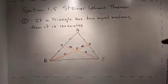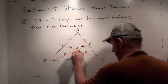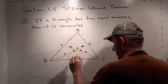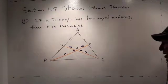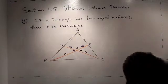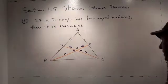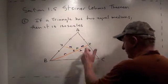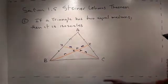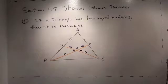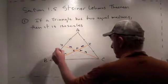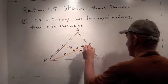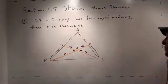Now notice that this angle and this angle are the same because they're vertical angles — opposite angles at an intersection. From elementary geometry, side-angle-side: we have two triangles where side, angle, side are the same, so those two triangles are congruent. And what that tells us is that this side here is equal to this side here, which is wonderful.